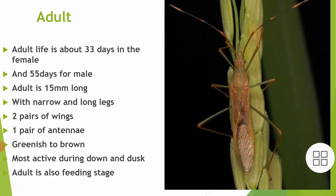Adult: Adult lifespan is about 33 days in female and 55 days for male. The adult is 15mm long with narrow and long legs, two pairs of wings, and one pair of antennae. Greenish to brown in color, and most active during dawn and dusk. Adults also have a feeding stylet like a knife.